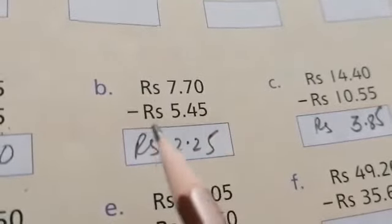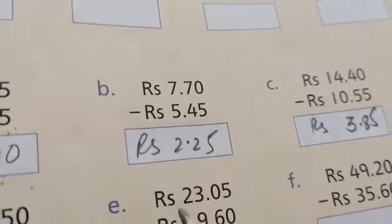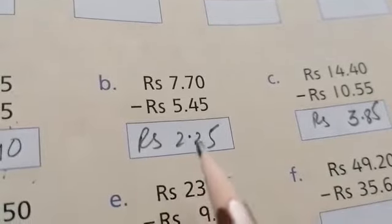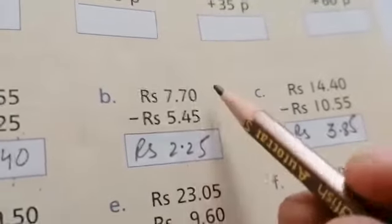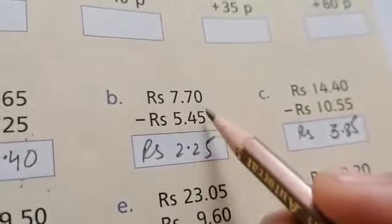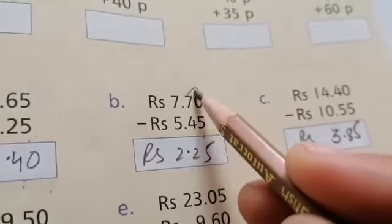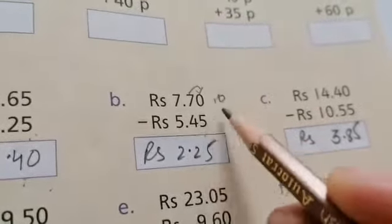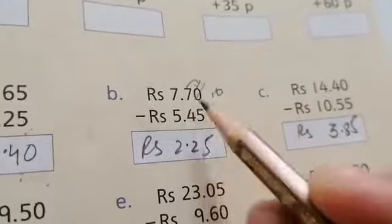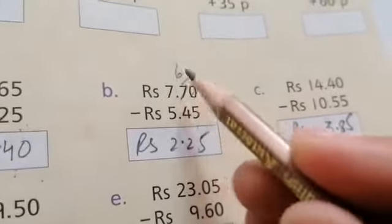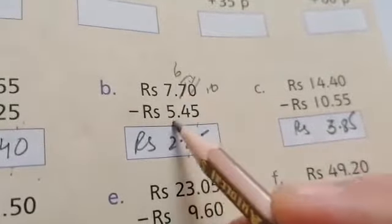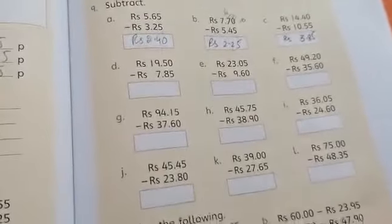Rupees 7.70 minus Rupees 5.45 is Rupees 2.25. What we will do is we can't subtract 5 from 0, so we will carry from here. It becomes 10. 10 minus 5 equals 5. It will become 6. 6 minus 4 is 2, 7 minus 5 is 2. Complete the rest of the part on your book.